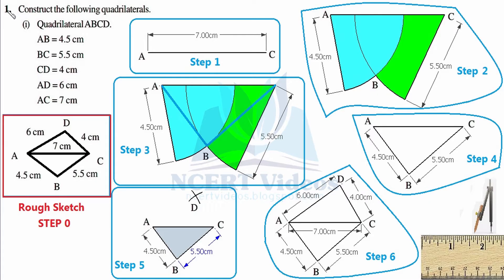Mathematics class 8, Chapter 4, Exercise 4.1 - Practical Geometry. We have to construct a quadrilateral named ABCD where certain measurements are given. In this exercise, a figure can be constructed if we are given certain information. This time we are given five measurements, so let's understand how to solve such practical geometry questions.